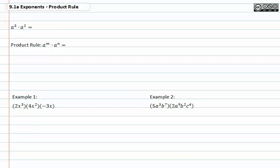When working with exponents, we use something called the product rule. Product, remember, means to multiply.